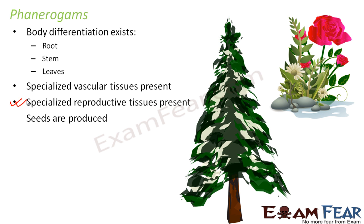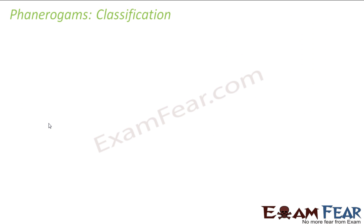Seeds are produced here. Until now, we were talking about no seeds, no flowers, no fruits — but now we have them all. The seeds are produced there. These Phanerogams are again classified into two types based upon how they reproduce. The reproductive system is no more hidden and they have specialized reproductive structures.